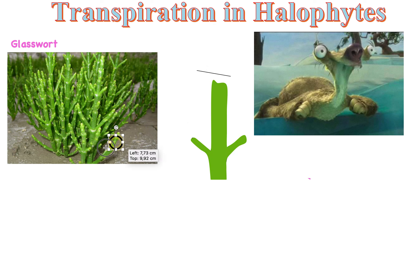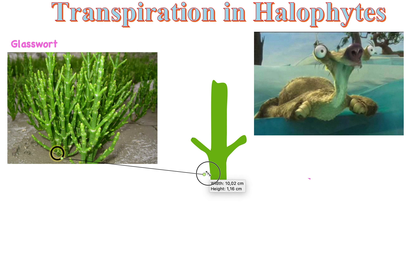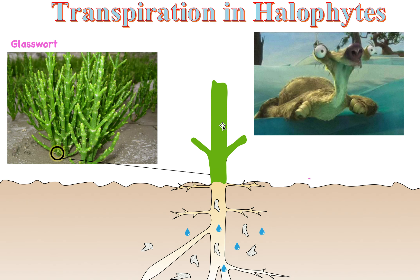Let's look at a little bit of the stem and the root, because the root is important in its mechanism of survival. You can see here's the green stem, here is the root, and here is underground.